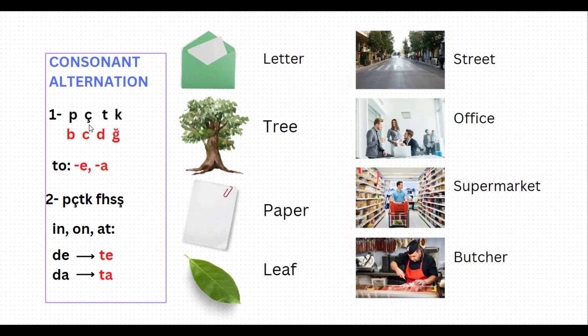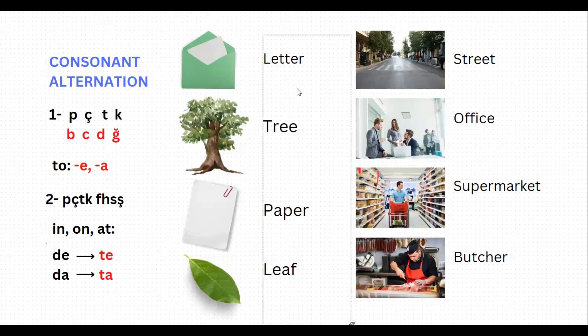In Turkish, if a word is ending with one of these consonants — p, ç, t, k — and continues with a vowel, then these consonants alternate to b, c, d, and soft g. Now let's try to practice this rule on the words here.